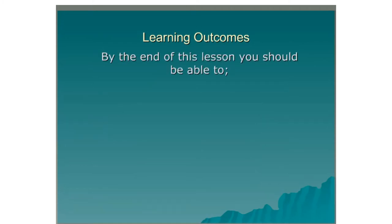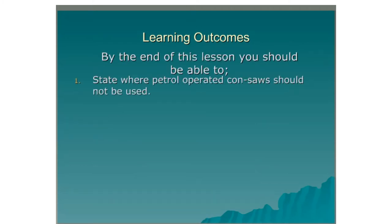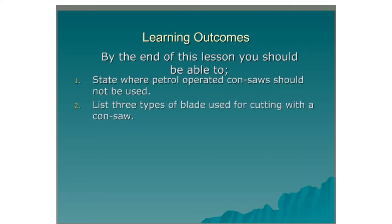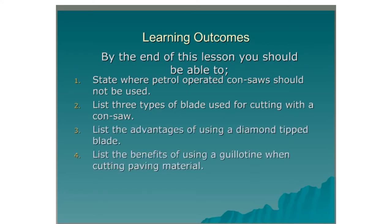Learning Outcomes. By the end of this lesson you should be able to: state where petrol operated con saws should not be used; list three types of blade used for cutting with a con saw; list the advantages of using a diamond tip blade; list the benefits of using a guillotine when cutting paving material; and name three types of guillotine.